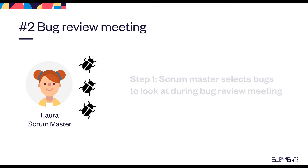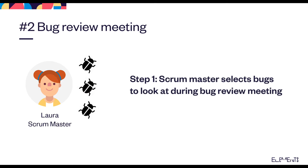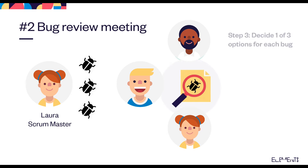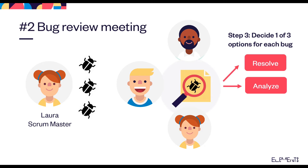There are three steps to this use case. Step 1: the scrum master selects bugs to look at during the bug review meeting. Step 2: during the meeting the team goes through the bugs. And step 3: the team will decide one of three options for each bug — resolve or fix, analyze for further understanding, or close if it can't be reproduced.